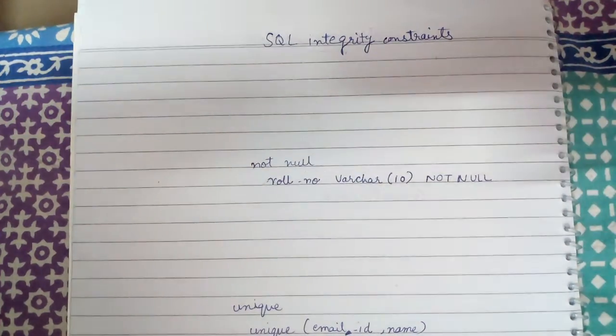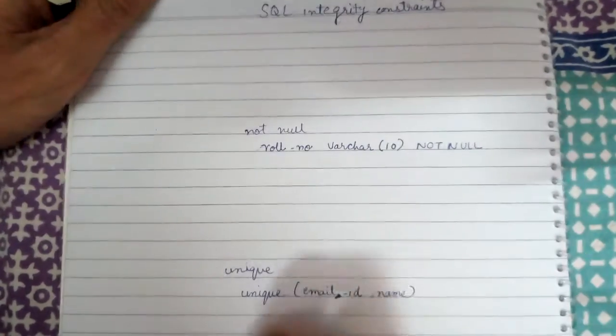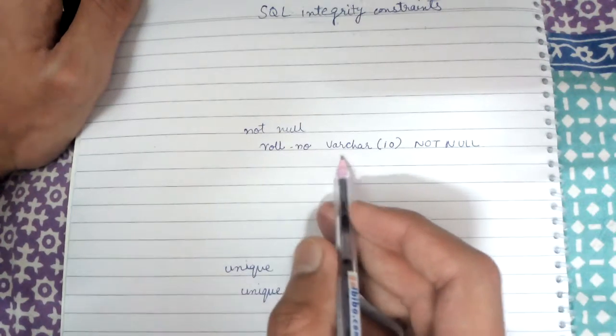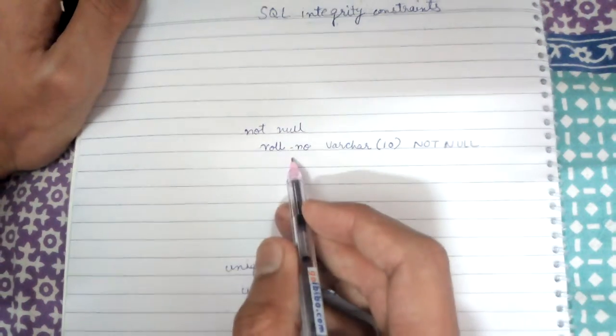The not null constraint basically states that the variable on which I have defined this constraint cannot be null.